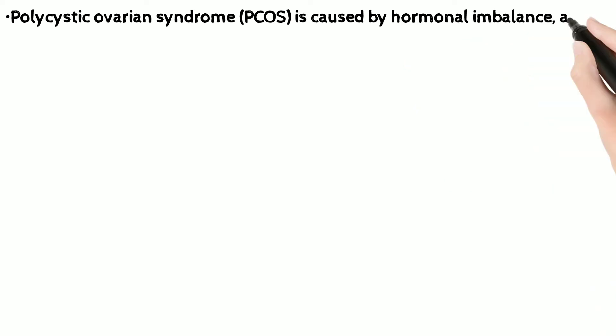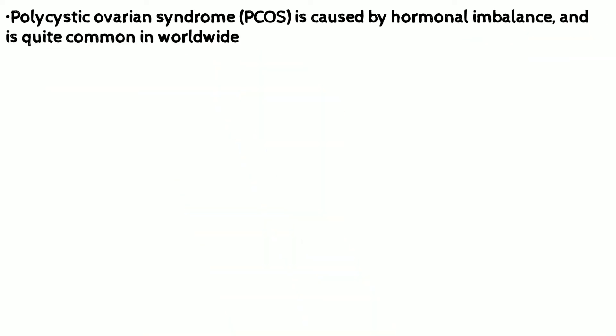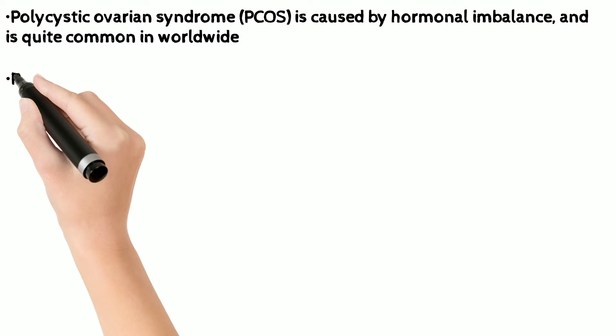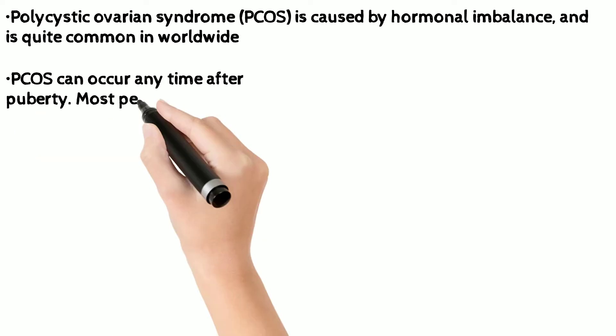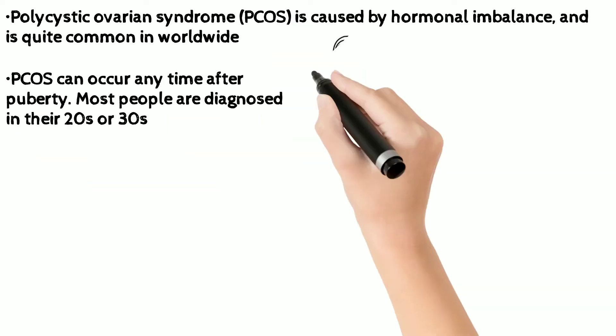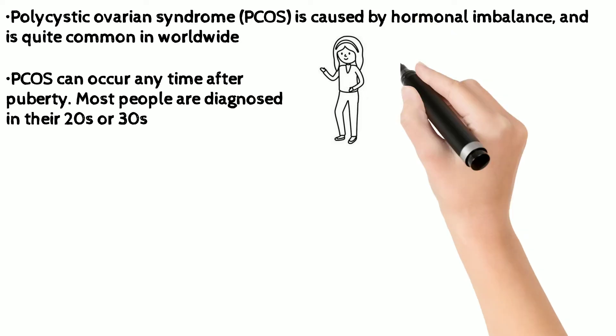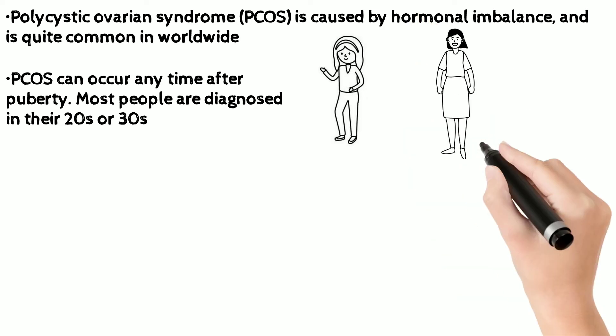PCOS is caused by hormonal imbalance and is extremely common worldwide, with around 25% of females experiencing it at some point of their reproductive age, but the most commonly affected group is those in their 20s and 30s.